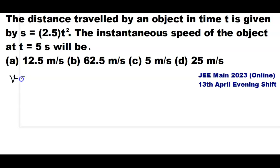We know that speed v is equal to the differentiation of distance with respect to time. That means v = ds/dt.